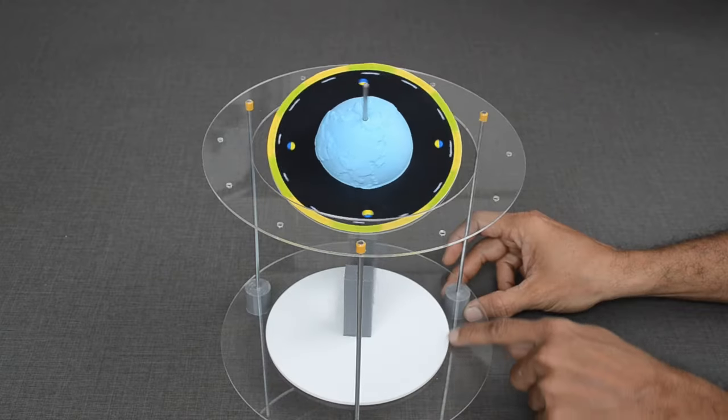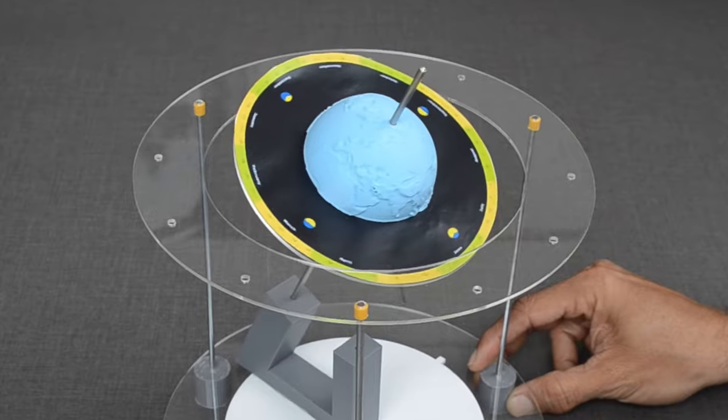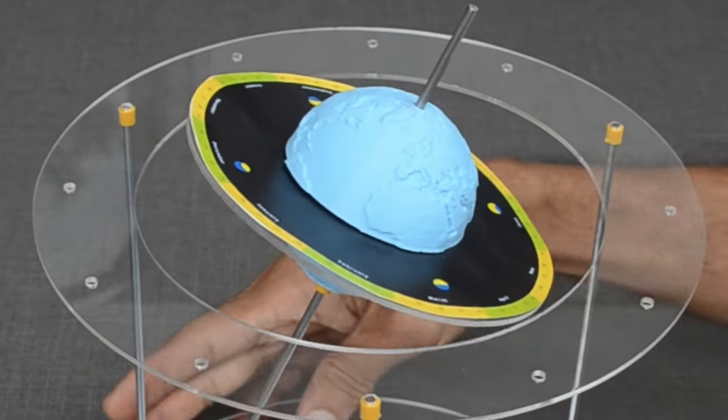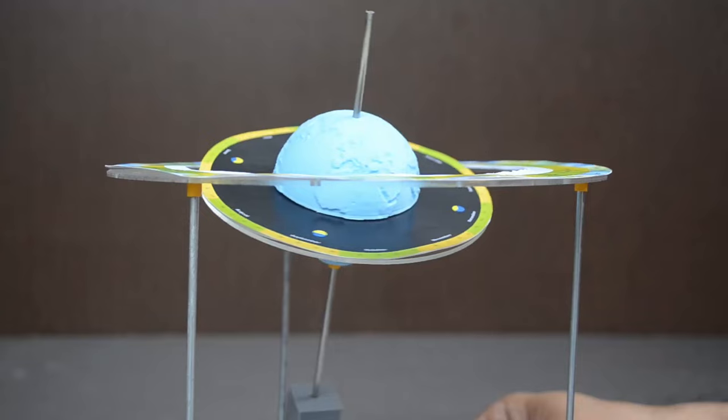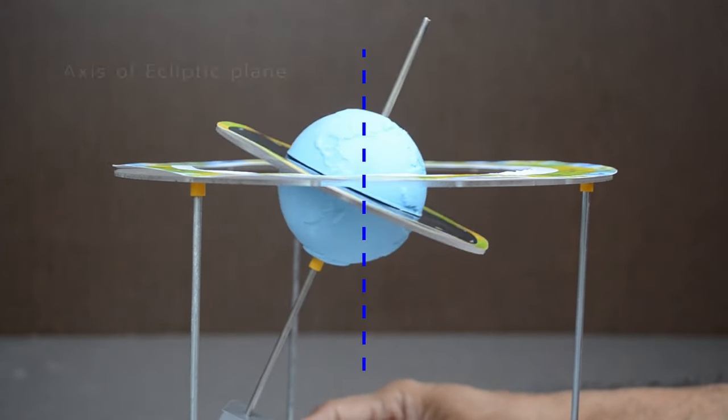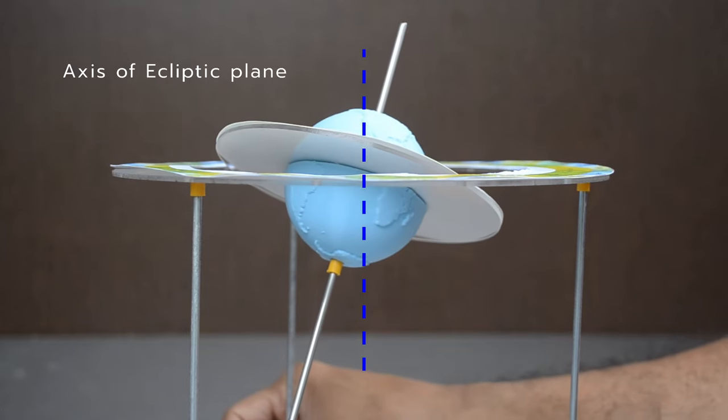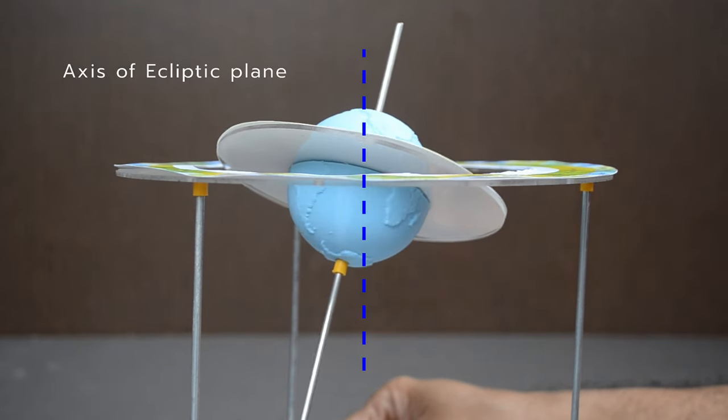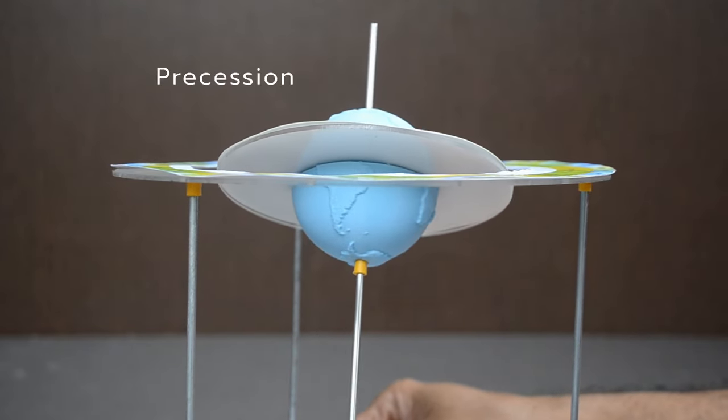Rotating the axle holder like this enables us to explore the third movement. Wobbling of Earth's axis. Earth's axis is rotating about another axis, axis of the ecliptic plane. This is known as the precession of Earth's axis.